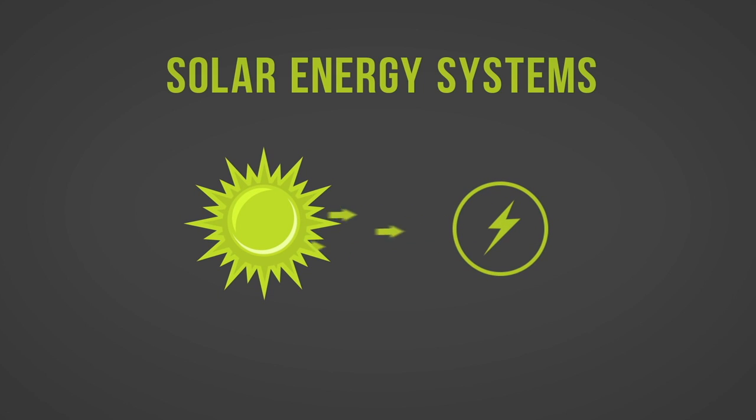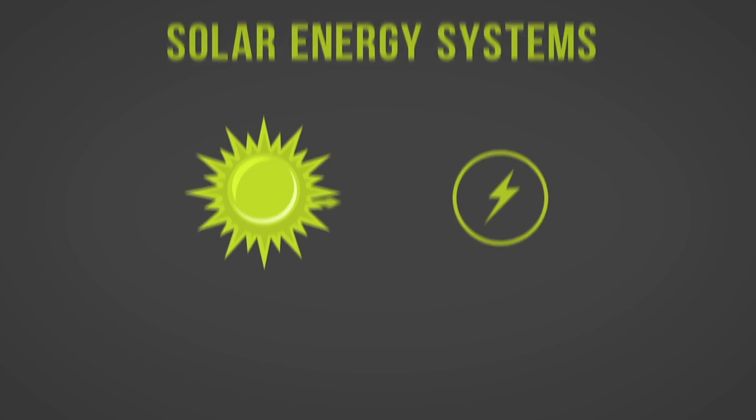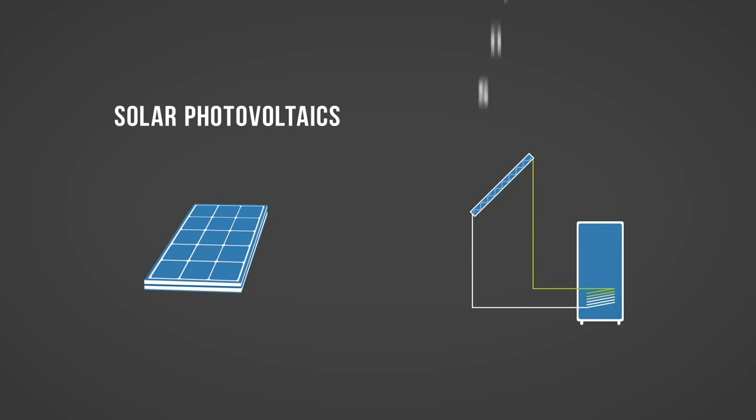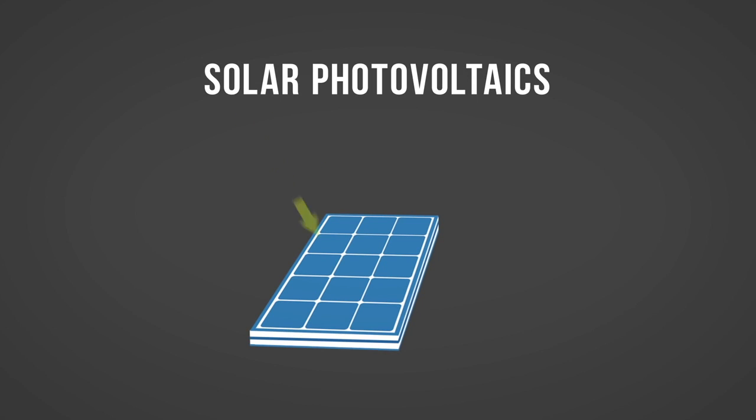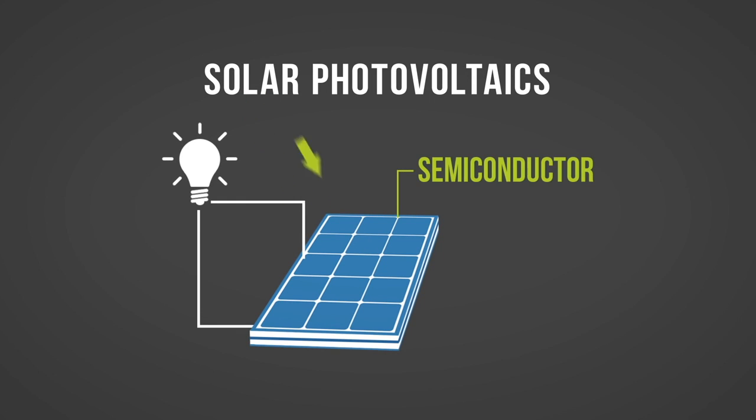There are two categories of technologies that harness solar energy: solar photovoltaics and solar thermal. Solar photovoltaic, or PV, is a technology that converts sunlight into direct current electricity by using semiconductors.